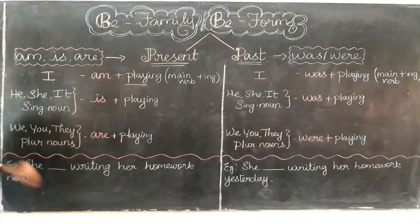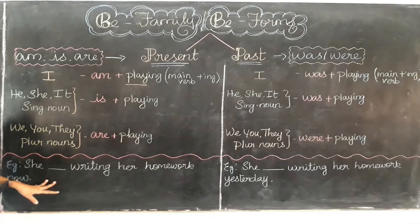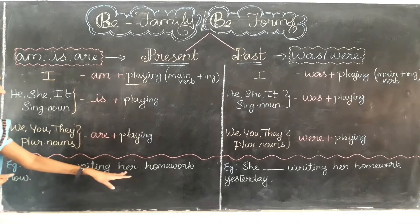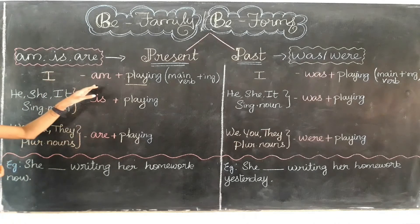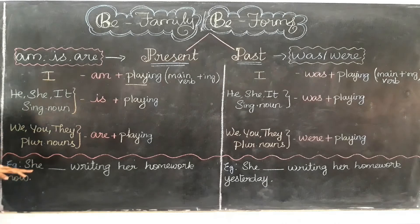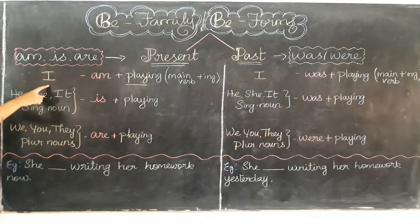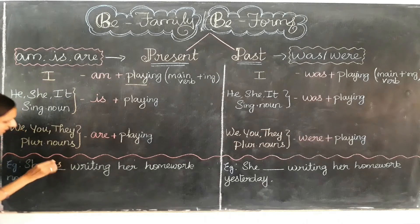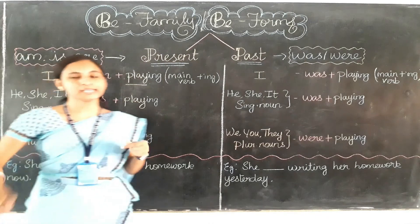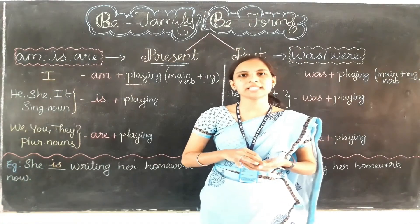Let's look at an example. I have written one example and you have to guess which verb is needed. She dash writing her homework now — which verb should be suitable for this blank? For the subject she in the present time, do we need to use am, is, or are? Am should be used with I, and is can be used with he or she. So for she, we need to use is. The answer is: she is writing her homework now. I hope you are clear with this. I will see you in the next video, thank you children.